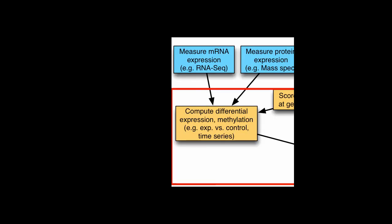For this workshop, we assume you're performing standard normalization, background adjustment, quality control, and statistics to increase signal and reduce noise. People often ask about specific normalization approaches for different data types: for DNA methylation, for instance, you might score methylation at gene promoters, since high methylation at promoters relates to gene silencing. These orangey boxes in the workflow give examples of how to go from raw data to a gene list.